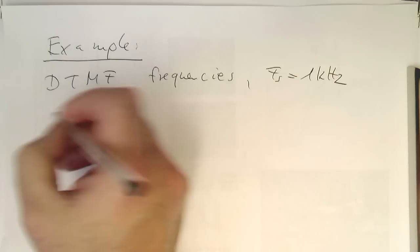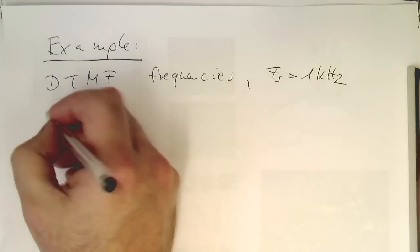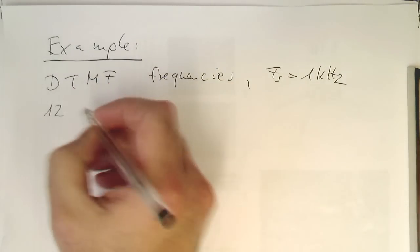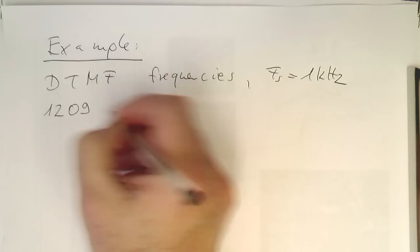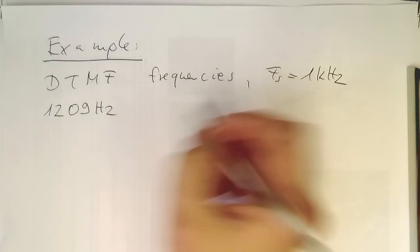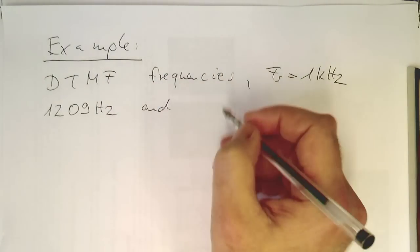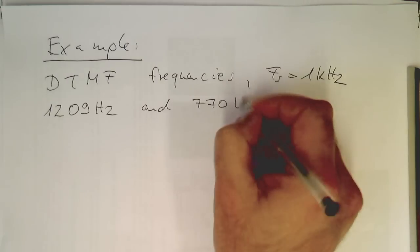Let's choose two DTMF frequencies: one 1209 hertz and the other frequency 770 hertz.